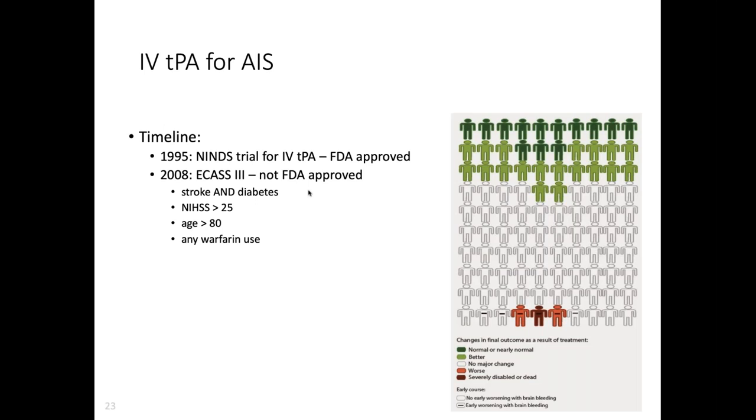Let's talk about IV tPA for acute ischemic stroke. The NINDS trial was the first trial to look at IV tPA back in the mid-nineties. This is probably in the top two or three things that have revolutionized stroke neurology. In 1995, this trial was done and FDA approved very quickly. Interestingly, there are two parts - one looked at improvement in 24 hours and that part was negative. People who got TPA didn't just pop up out of bed, but the benefit was at 90 days.